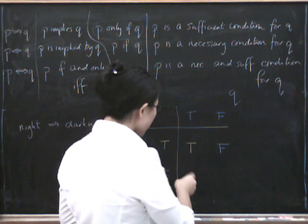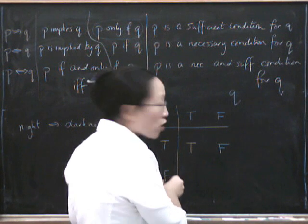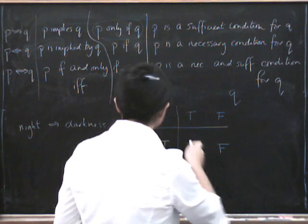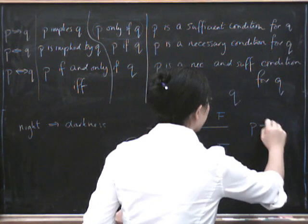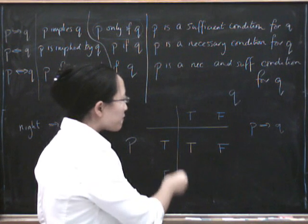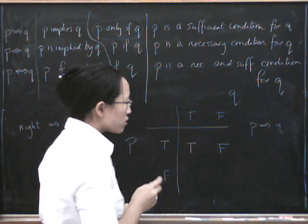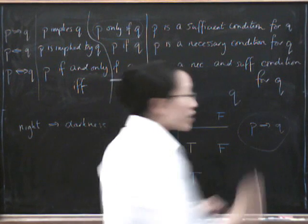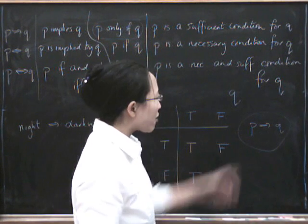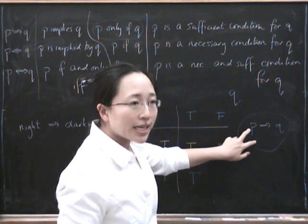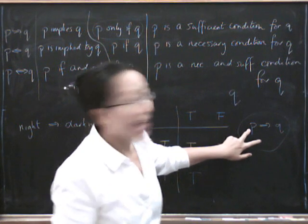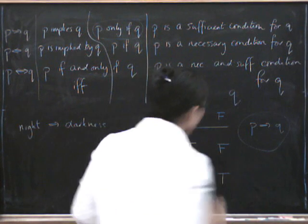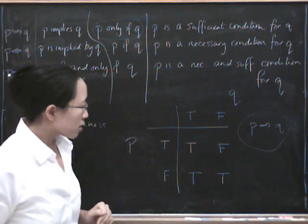But what about down here? If P is false, is it possible still for Q to be true? So we're doing P implies Q here. If P is false, is it still possible for Q to be true? Yes, it is. Because this statement only tells us anything about what happens when P is true. If P isn't true, anything is allowed. So both of these things are possible.